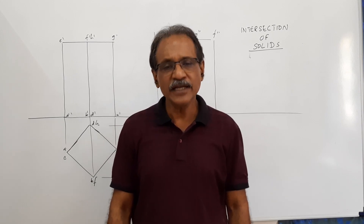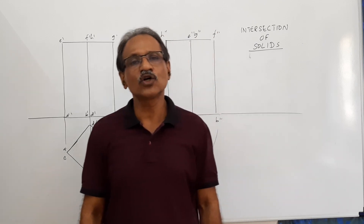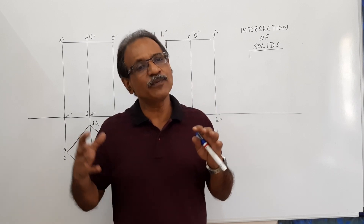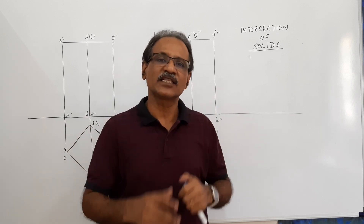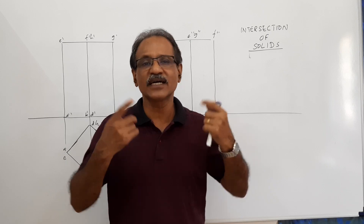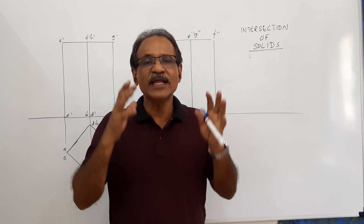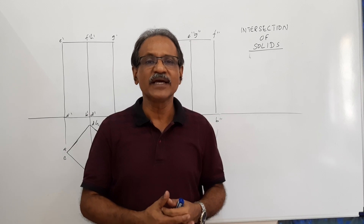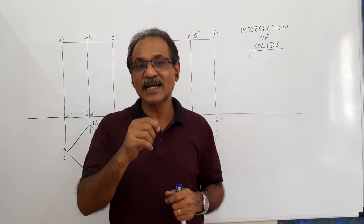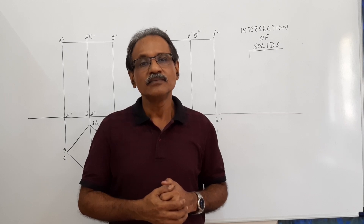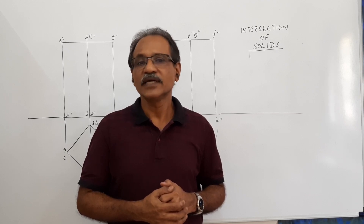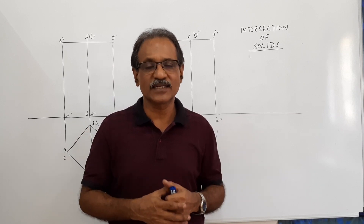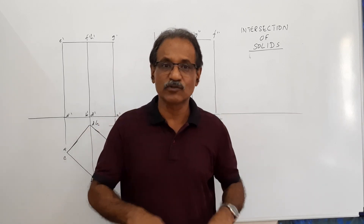In intersection of solids, we draw the joint between two solids when one solid penetrates another — specifically the intersecting curve or intersecting lines. When a prism is penetrated by a prism or a pyramid, you get intersection lines. When a cylinder is penetrated by a cylinder or cone, you get intersection curves.